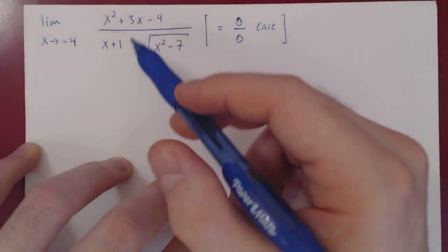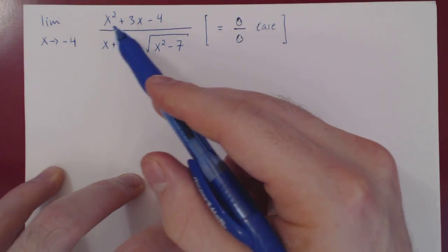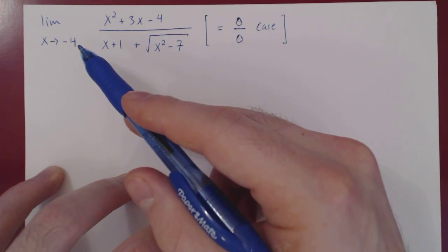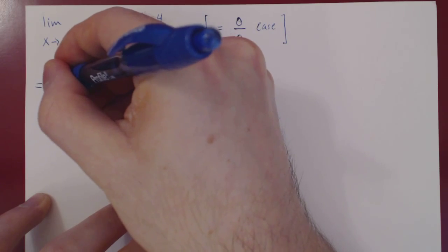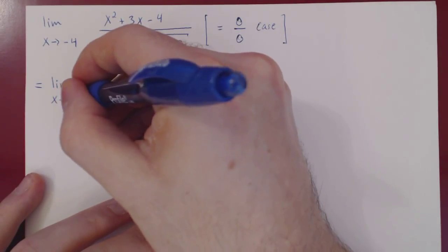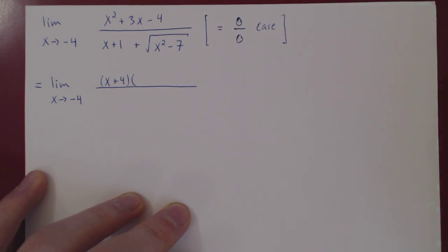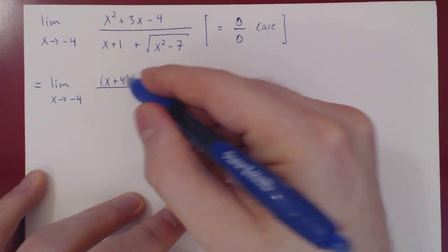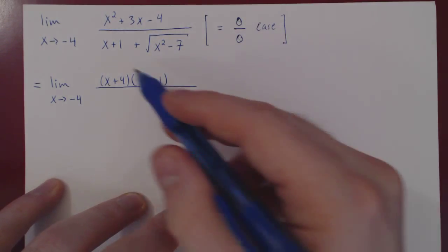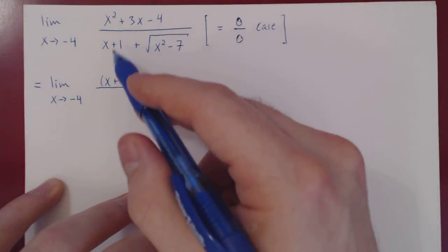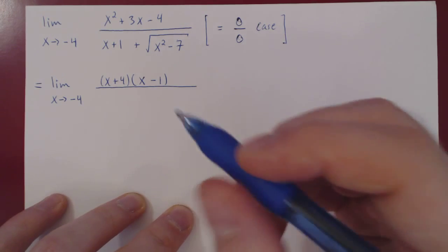Both the numerator and denominator approach 0, so we don't know what's going to happen. Again, two things: we have a quadratic polynomial that is 0 at negative 4, so a free factor is x minus negative 4, therefore x plus 4. Let's factor our quadratic polynomial. Our free factor is x plus 4. Because we have a quadratic, we can use the sum-product rule: 4 times negative 1 is negative 4, and 4 plus negative 1 is positive 3. Check.